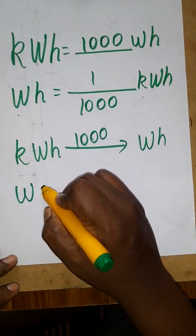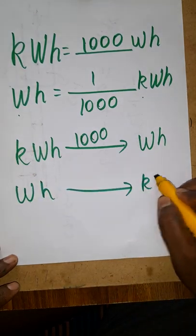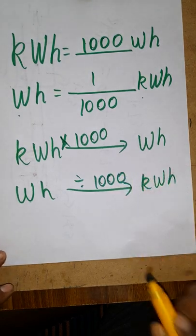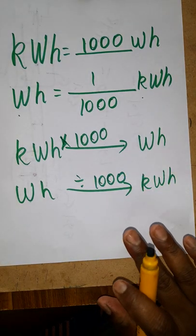If you want the opposite thing, watt to kilowatt, opposite thing, it's going to be divided by 1000. Very simple conversion.